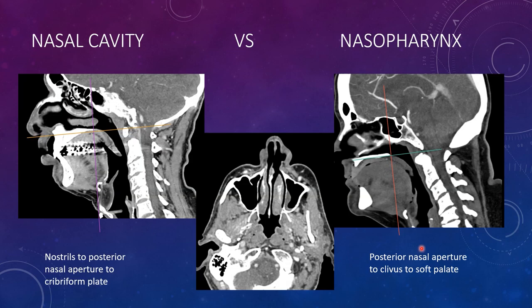To start, how to tell the nasal cavity from the nasopharynx. The nasal cavity extends from the nostrils to the posterior nasal aperture to the cribriform plate. So below the cribriform plate, from the nose back, basically consider it to the end of the hard palate. Everything anterior to this is cavity.